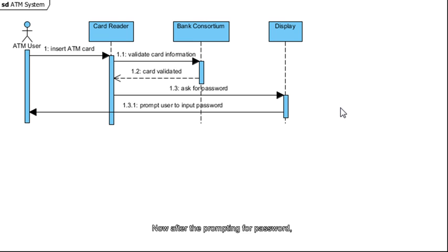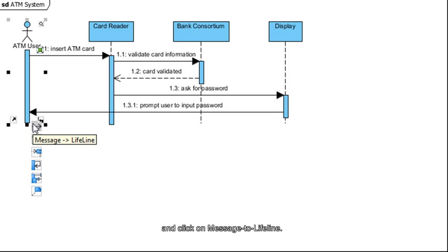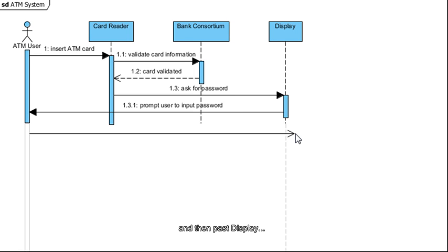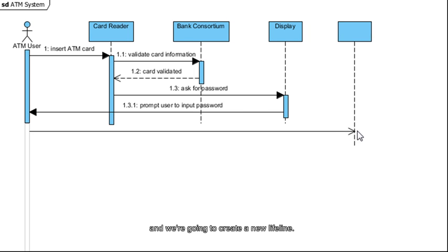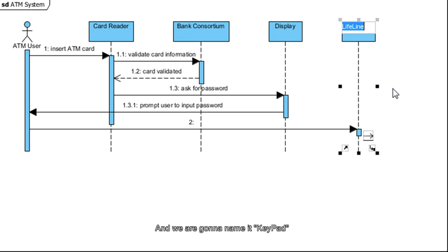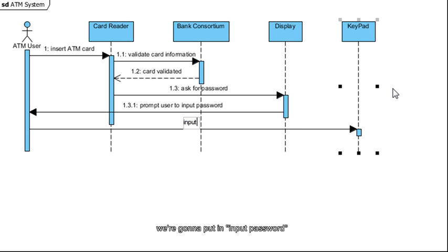After the prompting for password, the ATM User will input it. Select the vertical bar here and click on Message to Lifeline, drag it to the right, pass Display, and create a new lifeline — release your mouse button and name it Keypad, then press Enter when you're done. For the message, put in Input Password and press Enter when you're done.